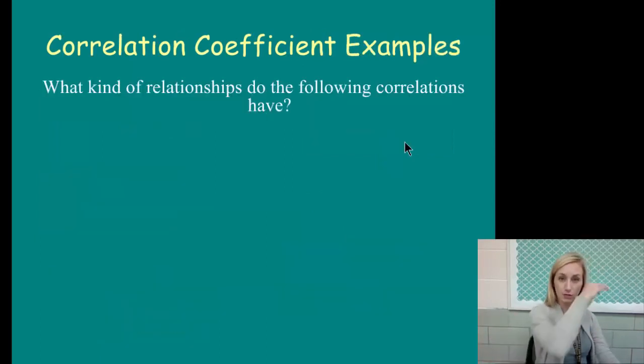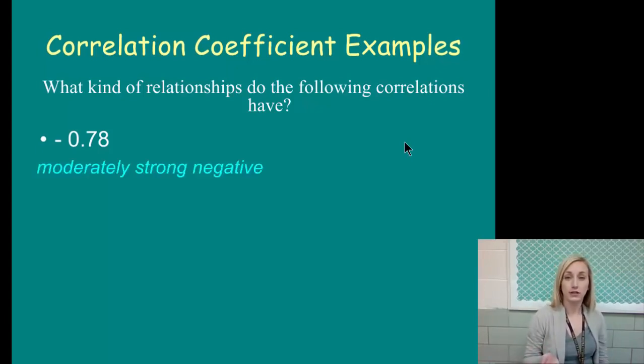Let's do some practice with these. What kind of relationships do the following correlations have? I believe these are in the guided notes that I've given you. If not, or if you're on a loose leaf sheet of paper, write these numbers out, and then I want you to say strong or weak. So negative 0.78. Again, the negative or positive doesn't mean anything about the strength. That just shows you it's a negative correlation. A 0.78, how strong would that be? It would be a moderately strong negative correlation. It's a moderately strong correlation because it's closer to 1 than not.